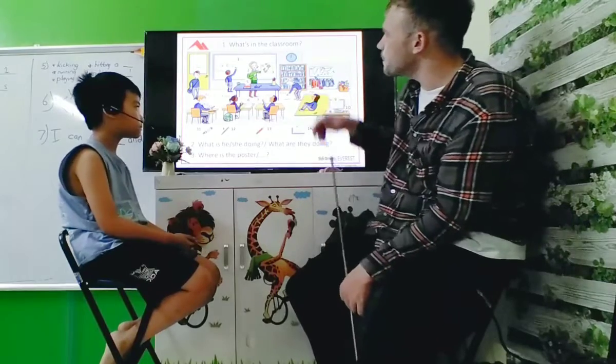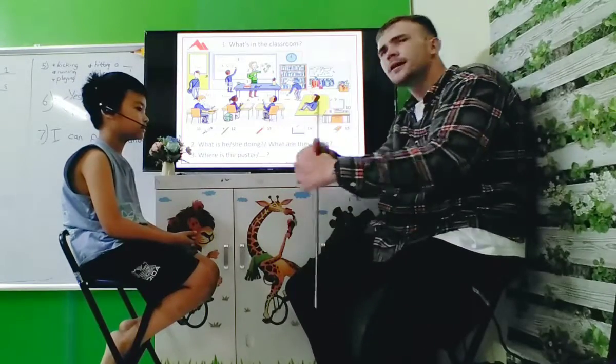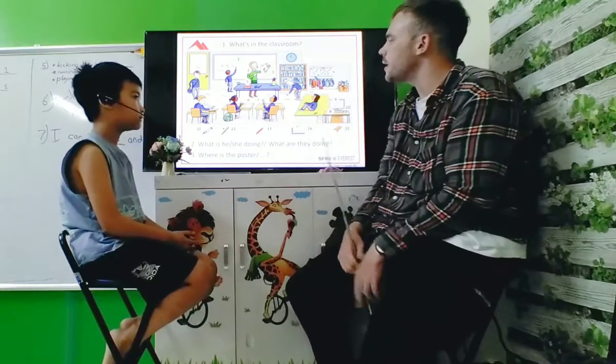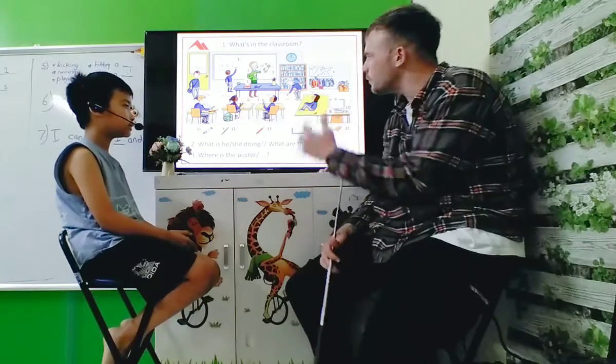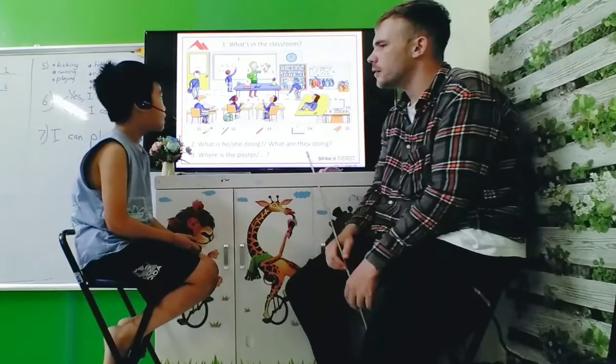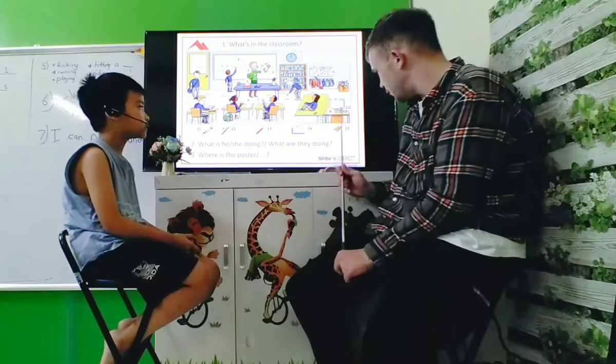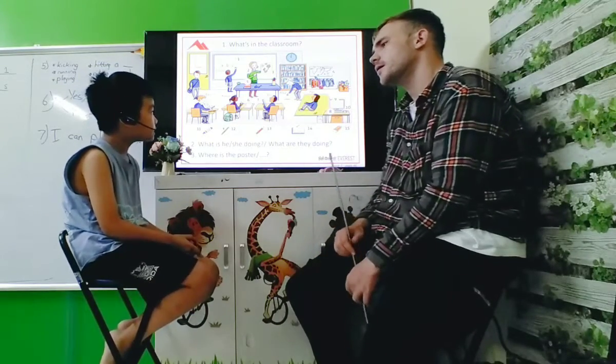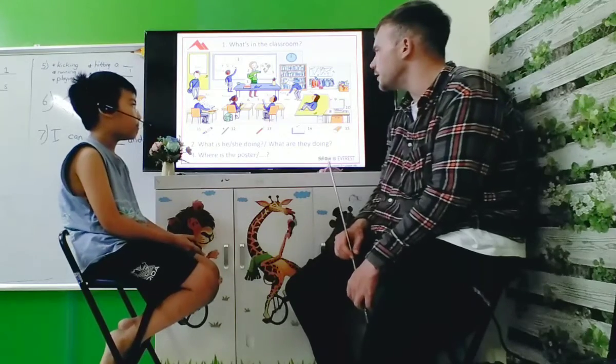So look at our picture. And what's in our classroom, Khoa? There is a or there are what? There is a clock. There is a computer. Yes, there is.